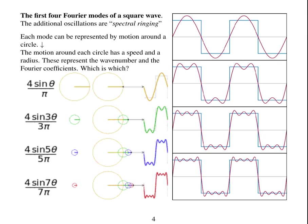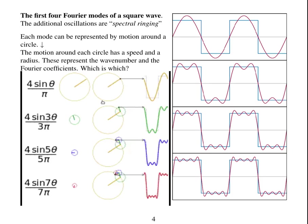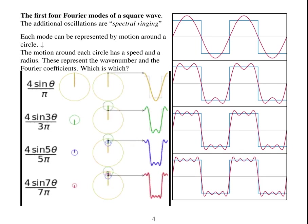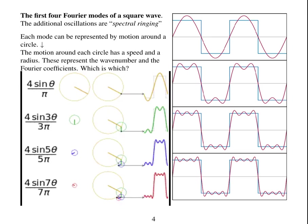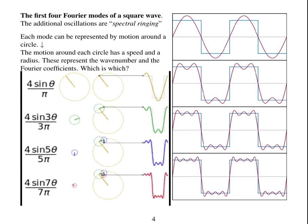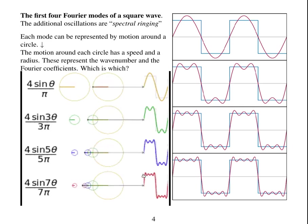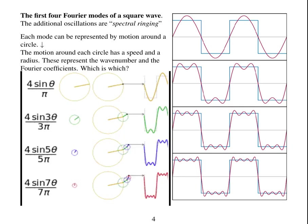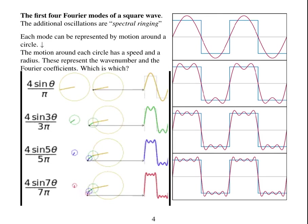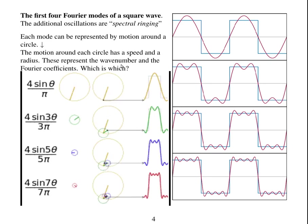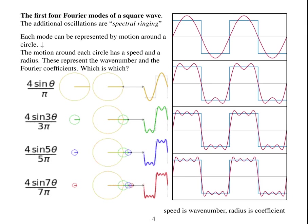Each mode can also be represented by the motion of a circle, which has a speed and a radius. The speed and the radius represent the wave number and the Fourier coefficients. Have a think about which is which. When all modes are added up, sometimes they cancel each other out and sometimes they act together going very fast around. The speed around the circle gives you the wave number, and the radius gives you the coefficient.